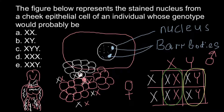But in some animals — for example, in cats, some mice, dogs, or cows — we can see this pattern of color distribution, when color is coded by an allele that is present on one of the X chromosomes.